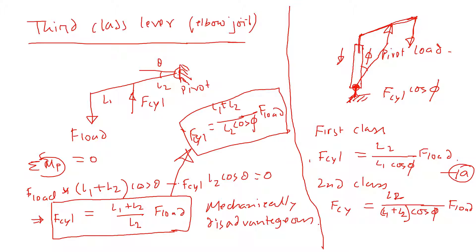Most of the time when solving problems, we use basic moment application theory — taking the moment with respect to the pivot point. It is more comfortable and reliable to take the moment and solve the problem directly rather than using these formulas. The formulas are provided to help you understand the three classes of levers and their advantages and disadvantages, but in practice we apply moments at the pivot point and solve manually.